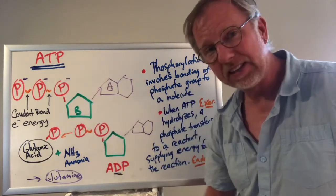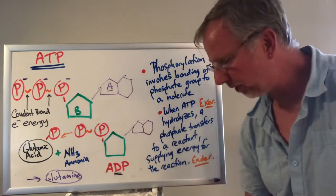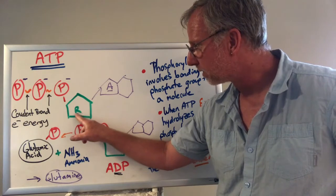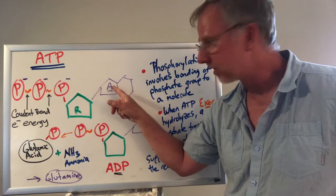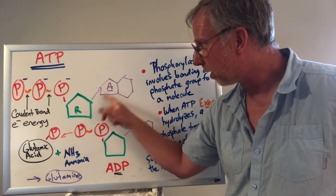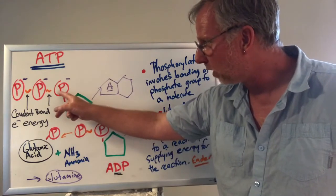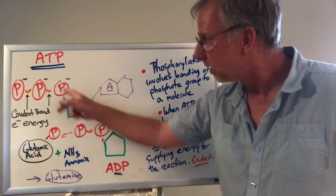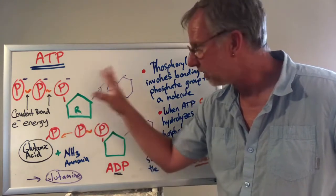ATP stands for adenosine triphosphate. There's an R for ribose sugar, and adenine — that's the nitrogenous base. Together, when they're bonded, they're called adenosine — that's the 'A.' Then there are one, two, three phosphate groups bonded to that sugar, and that's the triphosphate.